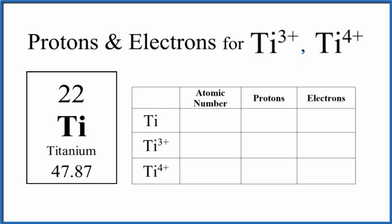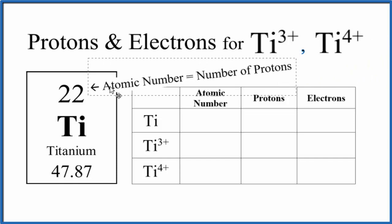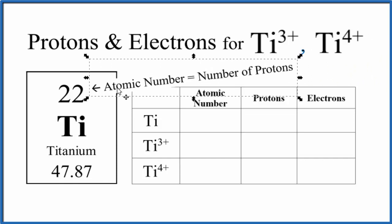The first thing we notice when we look at the periodic table, the atomic number here, that's 22. So the atomic number for titanium is 22, and that's the atomic number for its ions as well. If it's Ti, the atomic number will be 22.